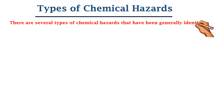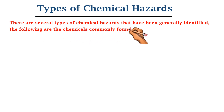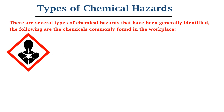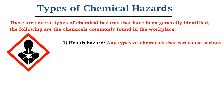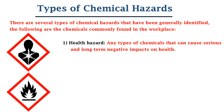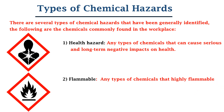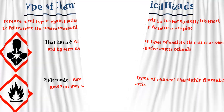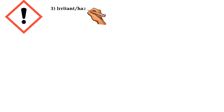There are several types of chemical hazards that have been generally identified. The following are the chemicals commonly found in the workplace, shown with their symbols. The first type is health hazard — any type of chemical that can cause serious and long-term negative impact on health. The second is flammable hazards — any type of chemical or highly flammable gas that may catch fire.